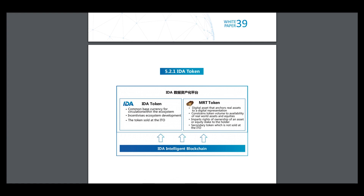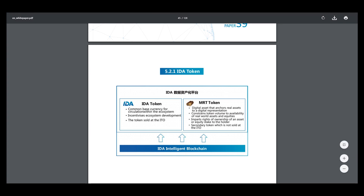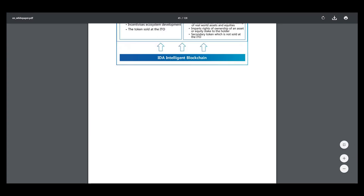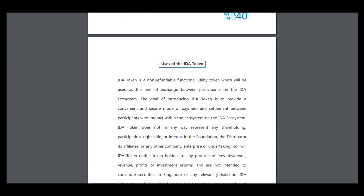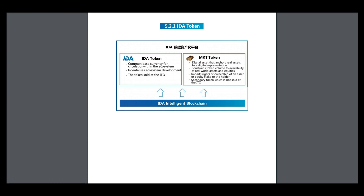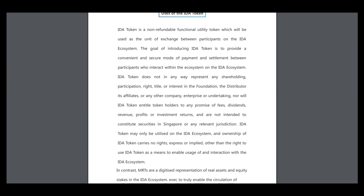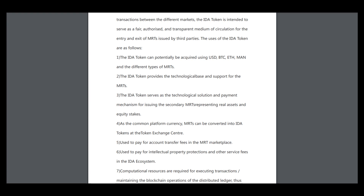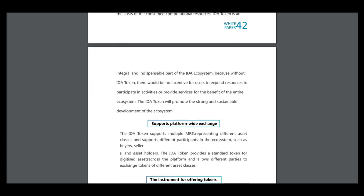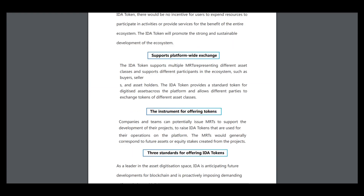To tie that structure, here are two types of IDA tokens: the IDA token and the MRT token, and we can use them in different ways. You can see where you can buy them and when you can use them. You can use IDA tokens for support and platform-wide exchange.